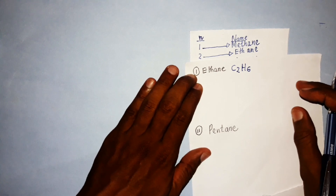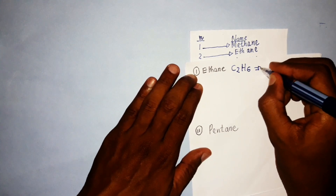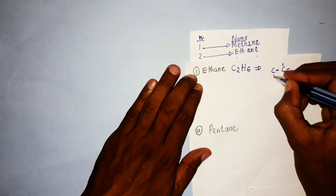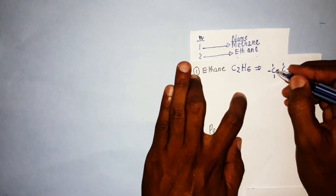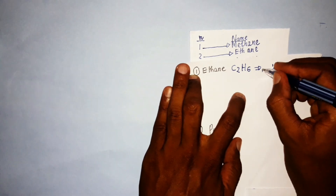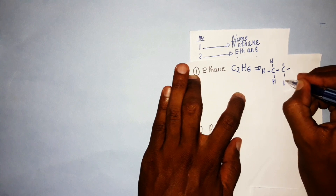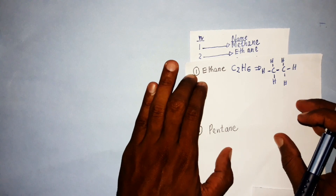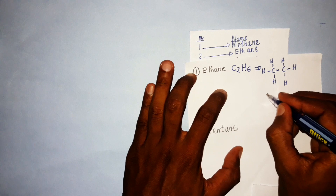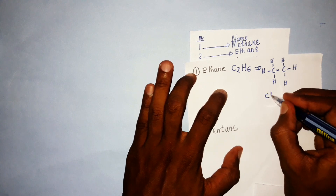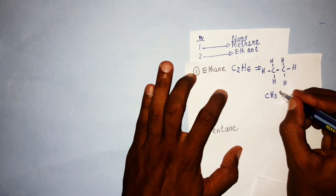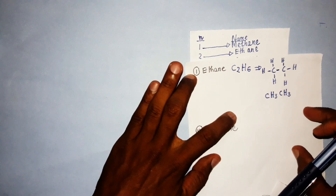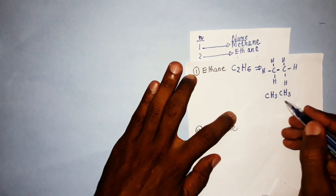To draw the open structural formula of ethane, you draw two carbon atoms with a covalent bond between them. Remember, carbon forms four bonds, so you distribute the hydrogen atoms — three on each carbon — giving six hydrogen atoms total. The condensed formula then becomes CH₃CH₃.